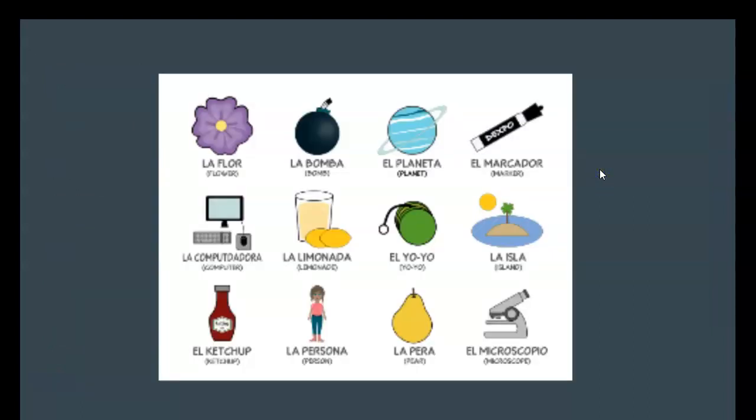You have the cognates handout. It says cognates using what you know. For example, la flor is flower, la bomba is bomb, el planeta is planet, el marcador is marker, la computadora is computer, la limonada is lemonade, el yo-yo is yo-yo, la isla is island, el ketchup, la persona is person, la pera is pear, and el microscopio is microscope.